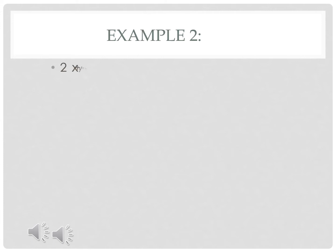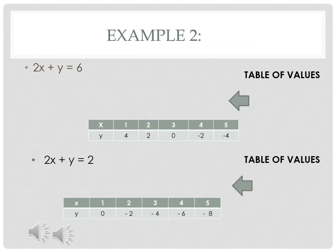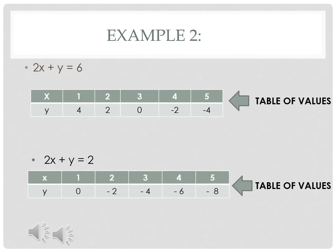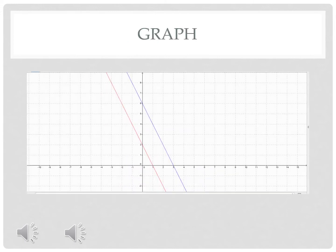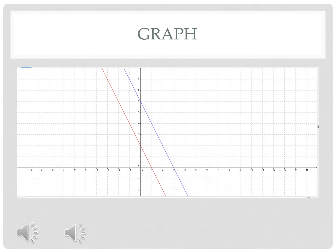Example number 2: 2x + y = 6 and 2x + y = 2 is a system of linear equations. We create a table of values to find the coordinates of the points to graph. This is the graph of 2x + y = 6 and 2x + y = 2. This system of linear equations is inconsistent.